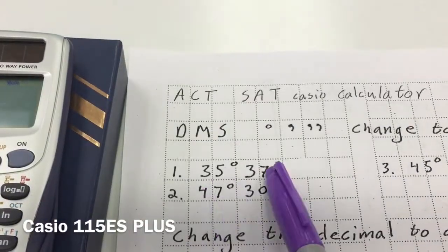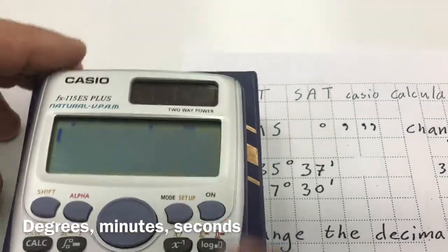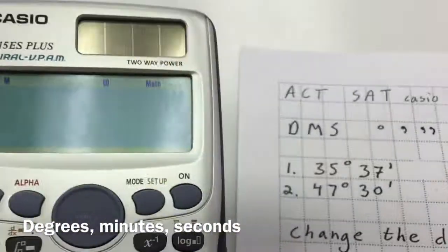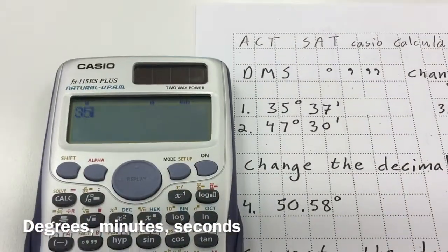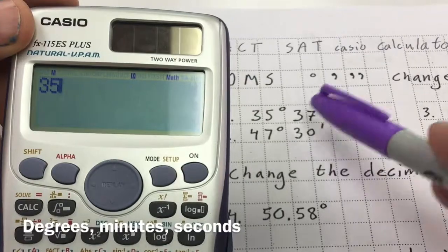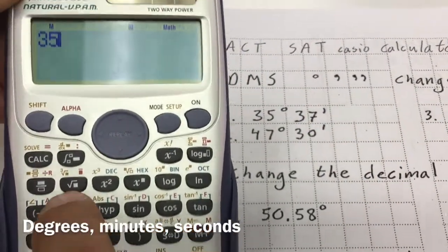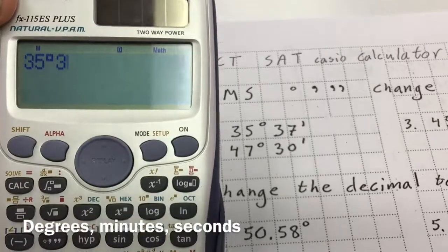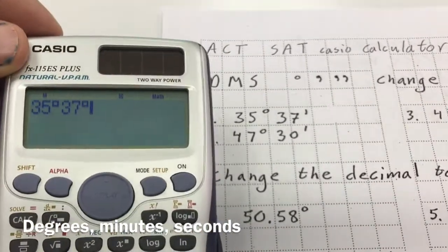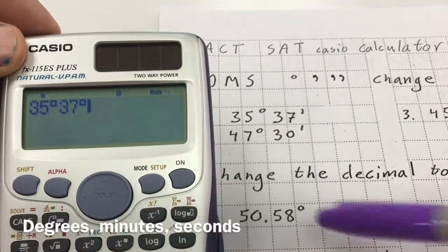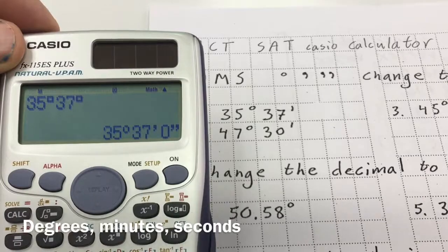I want to change degrees and minutes to a decimal. So we're going to turn our calculator on. I'm going to type in 35, and now I need that degree symbol — it's right above the 8, above the English button. Then I type in 37 and hit that button again, so it looks just like the problem: 35 degrees, 37 minutes. Hit equals and it shows up.